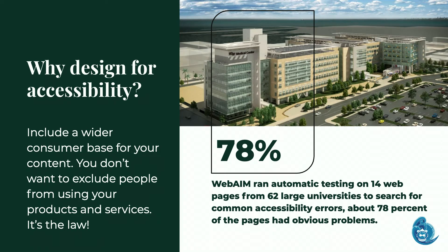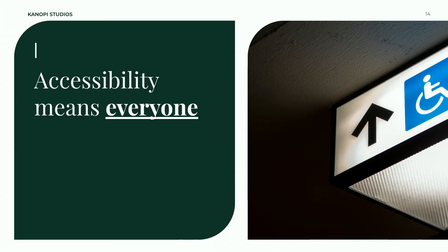Webbing did a study testing 62 large universities — one from every state and territory — searching for common accessibility problems. They found 78 percent had obvious problems. By 2018 the number went up, but there's so much room for improvement. Being accessible means everyone.